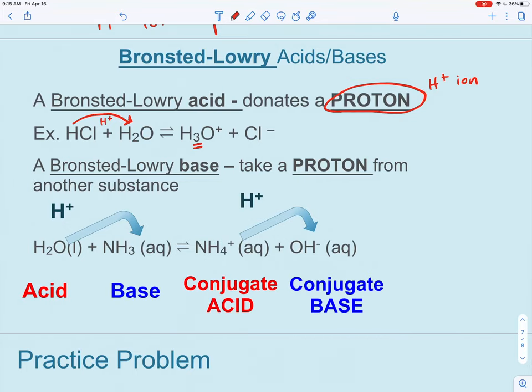The chemical that receives that proton is going to be what we call the Bronsted-Lowry base. So here we have the acid. And so water, in this case, would be a Bronsted-Lowry base because it's receiving a proton. So one way I like to think of this is acids give away, whereas bases borrow. That's one way you might remember which is which.